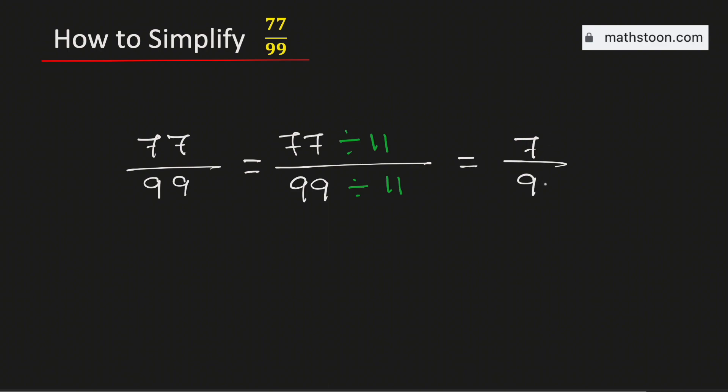This fraction is simplified because there is only one number which can divide both 7 and 9, and that is 1. So the fraction 77 over 99 simplified is equal to 7 over 9, and it is in its lowest terms.